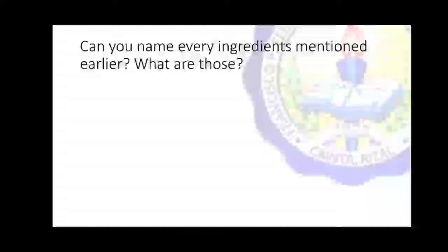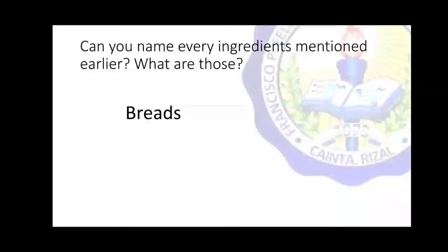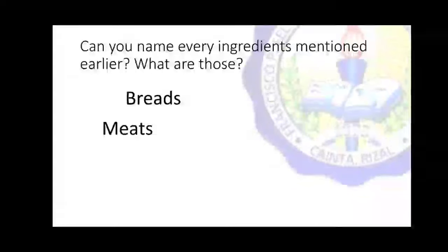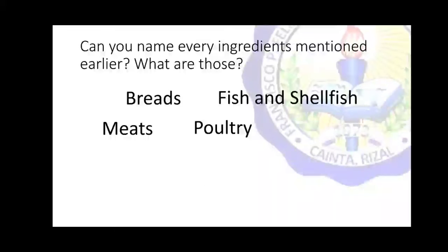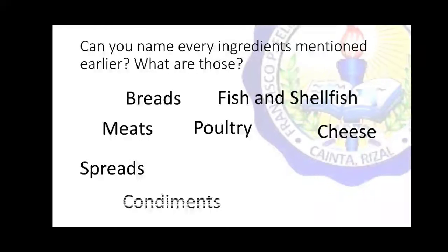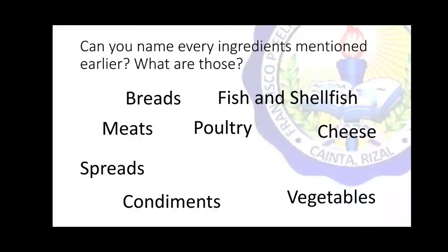Did you learn something from the presentation? Let's find out how much you learned. Can you name every ingredient mentioned earlier? We have breads, meats, poultry, fish and shellfish, cheese, spreads, condiments, vegetables, and miscellaneous. Did you get them all? Very good!